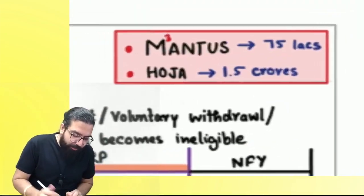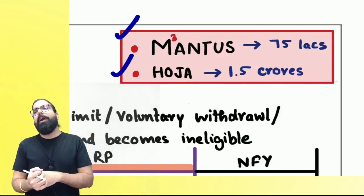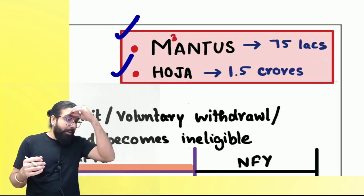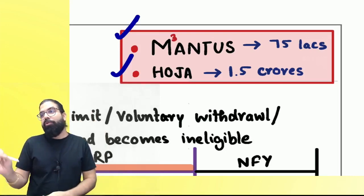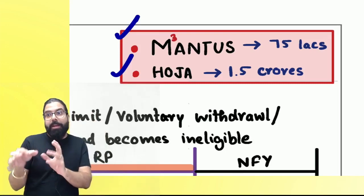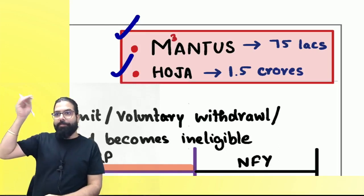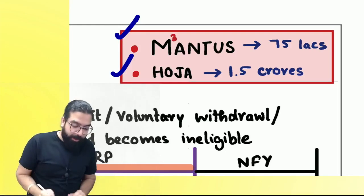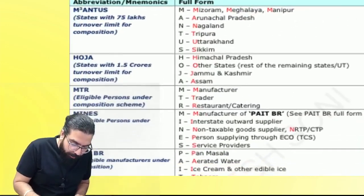Now listen carefully: who are the people for whom 75 lakh is applicable and who are the people for whom 1.5 crore is applicable? I thought about how to remember it, and a student came and said, 'Sir, it should be easy to remember.' So we made the mnemonic 'MANTAS HOJA'. What is the full form? M for Meghalaya...